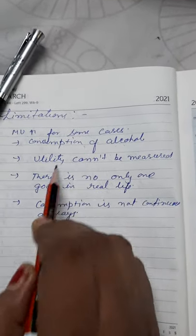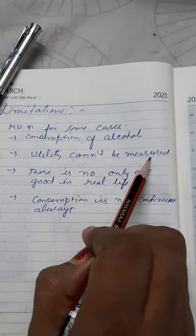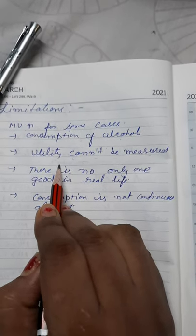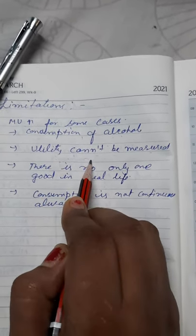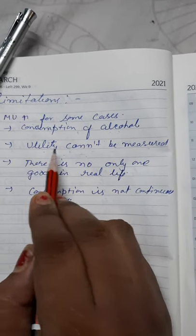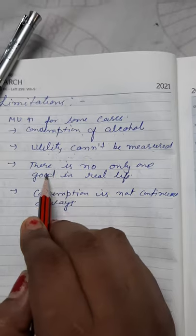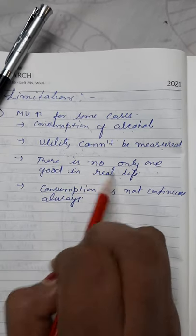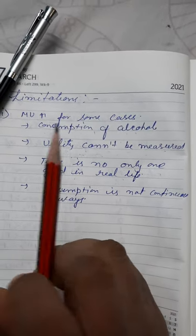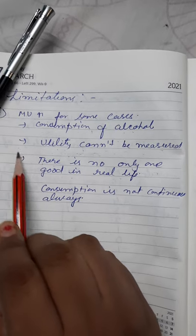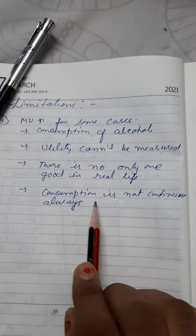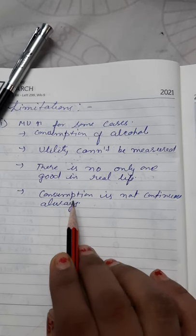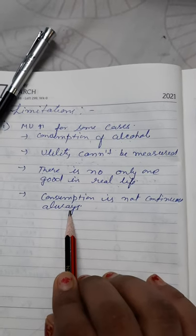What happens with the limitations? MU increases for some cases. The second one, utility cannot be measured in numbers. We cannot be happy for 2 kg or 3 meter or 3 pound. So it should be ranking. We can be happy more or less. So it cannot be measured in numbers. There is not only one goods in real life. Real life we are not consuming only one goods. Because it is a theory that is based on the single commodity. Next, consumption is not continuous always. Consumption we do intermittently. We are not consuming without any time gap lag. These are the limitations of the utility analysis of the consumer's equilibrium.